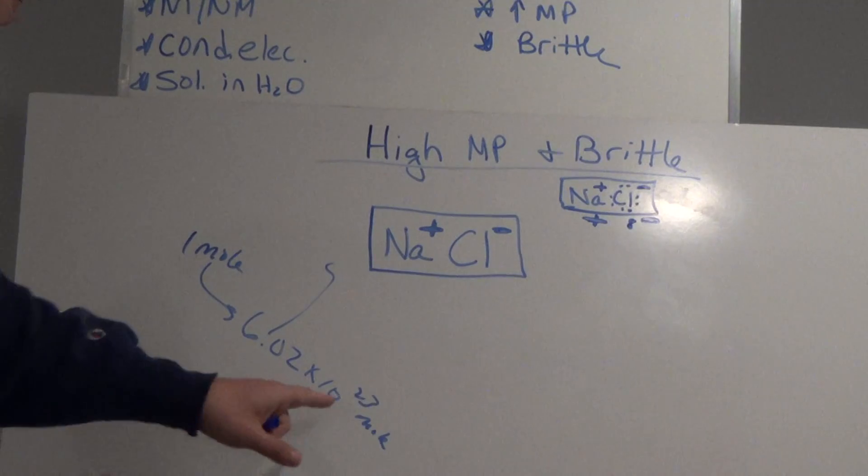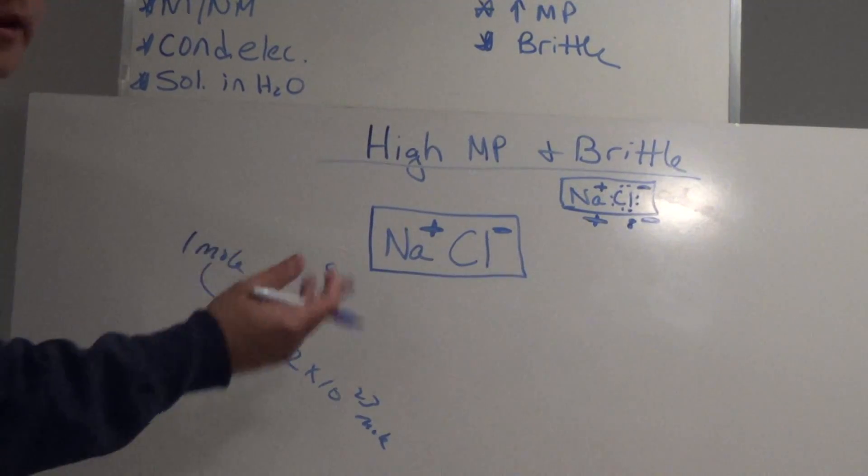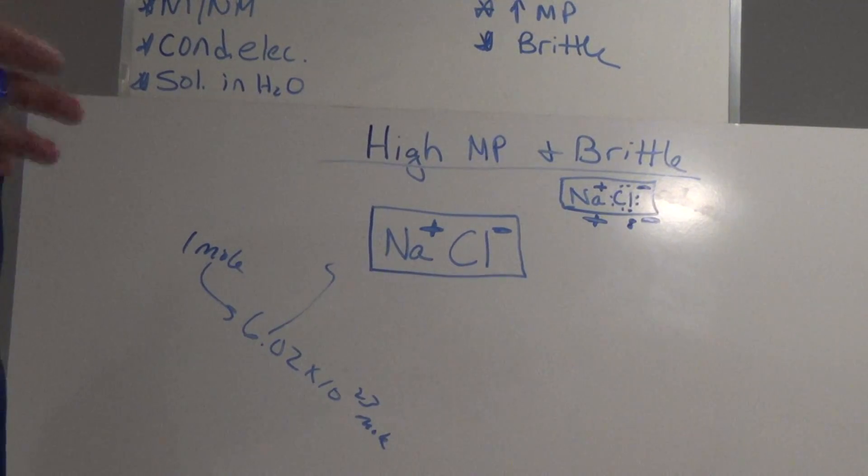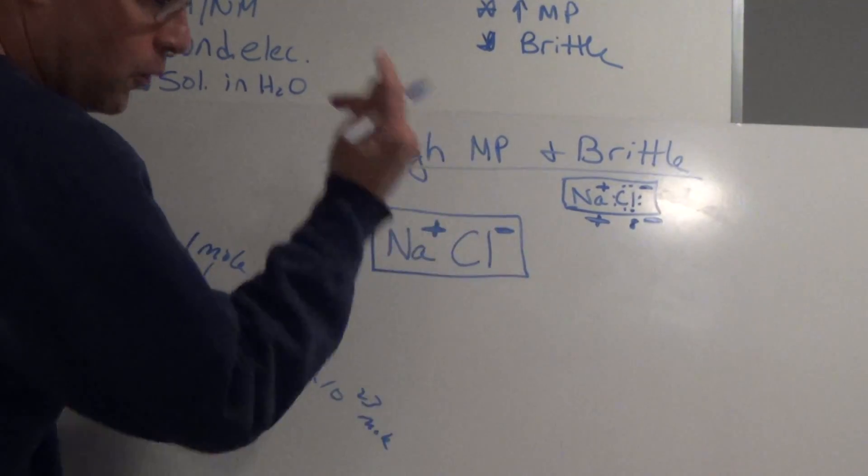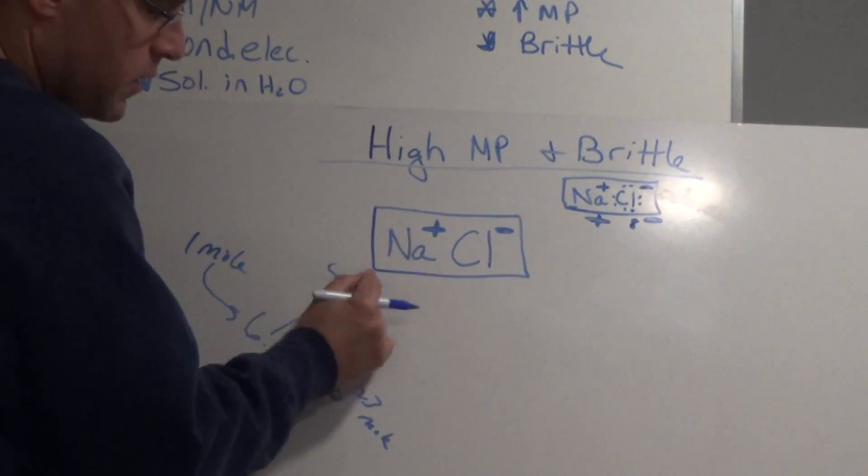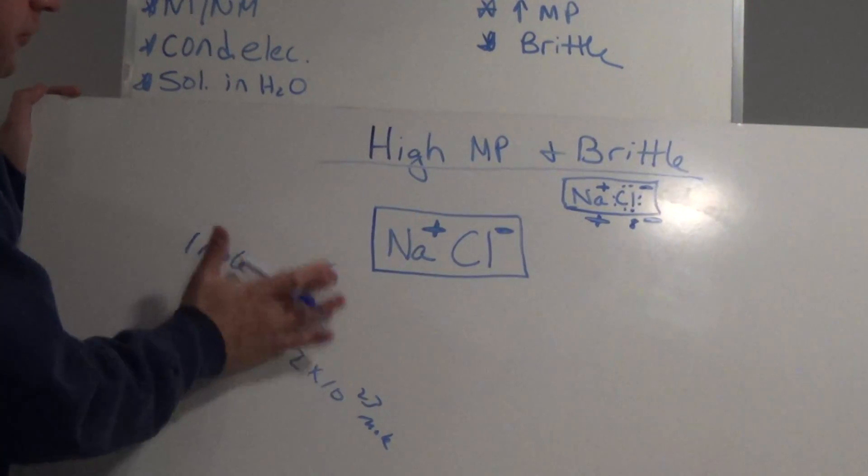But what if I had one grain? It would still be something like 10 to the 6th, 7th, 8th, 9th, 10th to the 14th probably. So it's still going to be a lot. How does 10 to the 14th in one grain measure up? How do they arrange themselves?